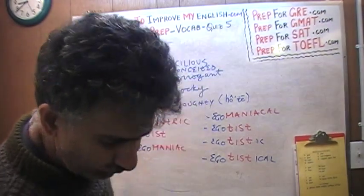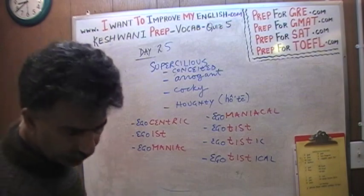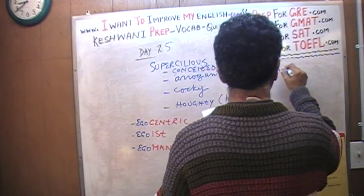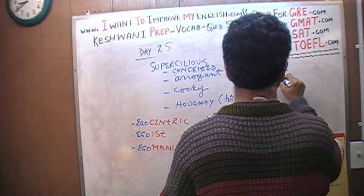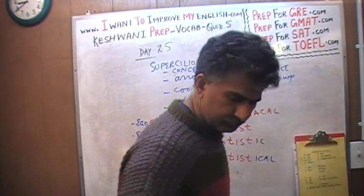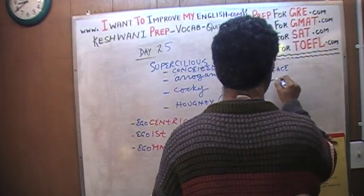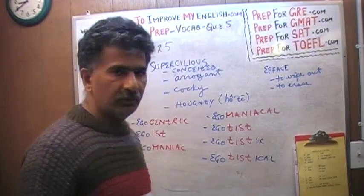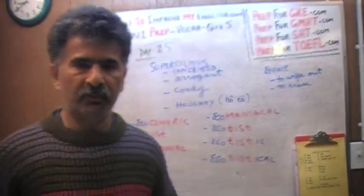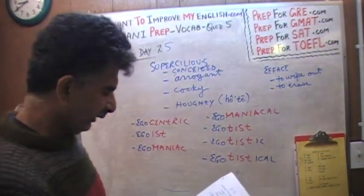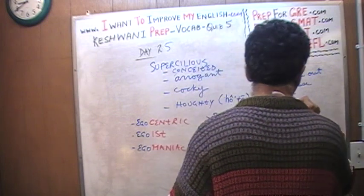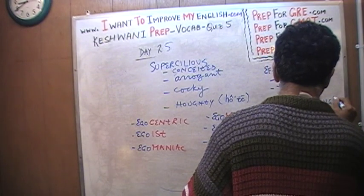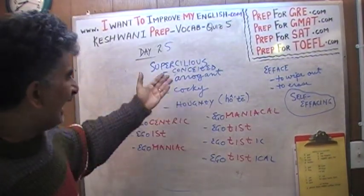The very last word we learned on day 25 was 'efface,' which means to wipe out or to erase. And from that we have the expression 'self-effacing.' Self-effacing is an antonym of all those ego words.